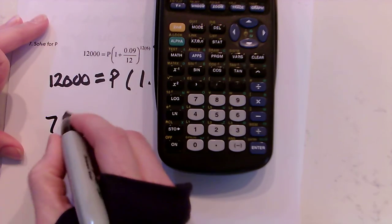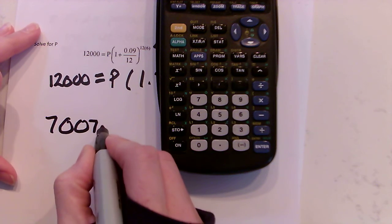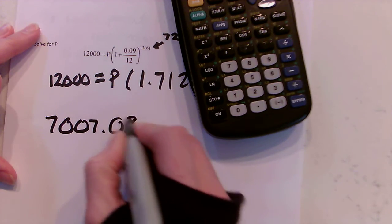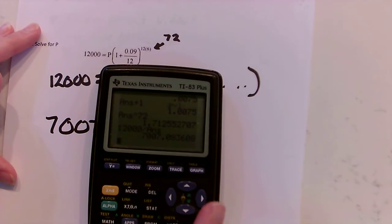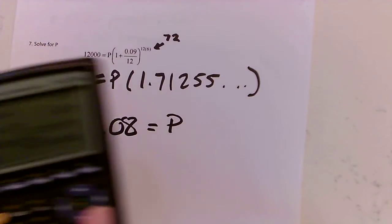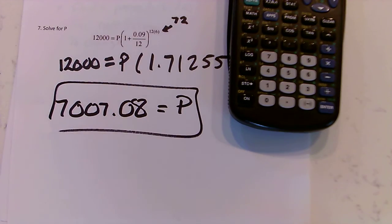And I get 7007 and then we'll say to the nearest hundredth, 0.08. That's going to be equal to p. So hopefully you can follow all that work in the calculator, and there's our answer. Thank you.